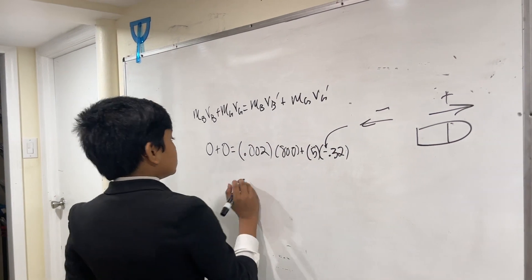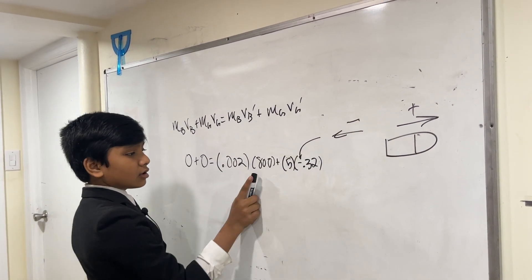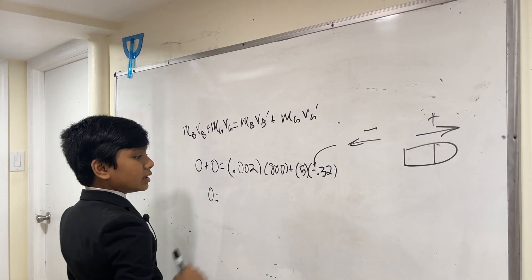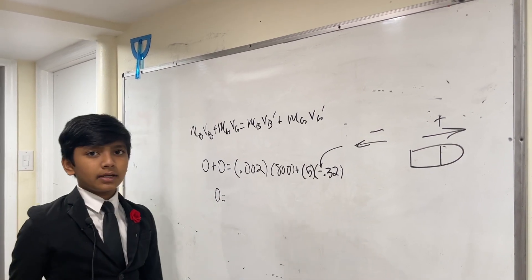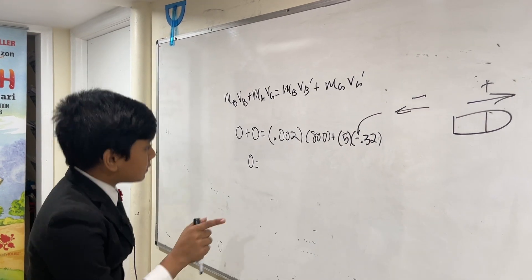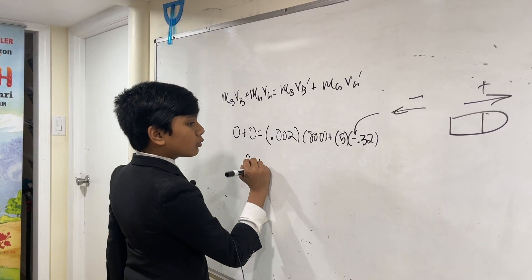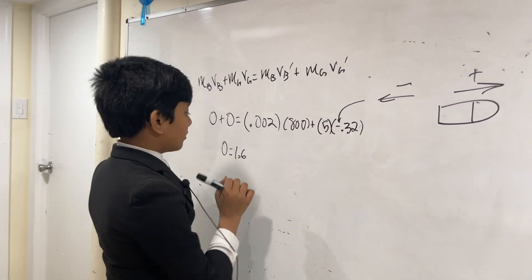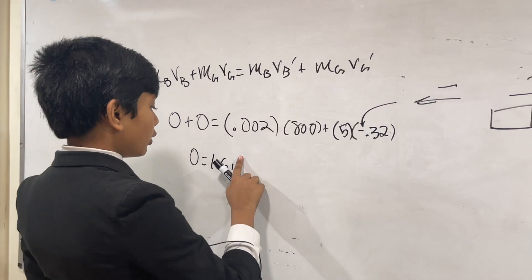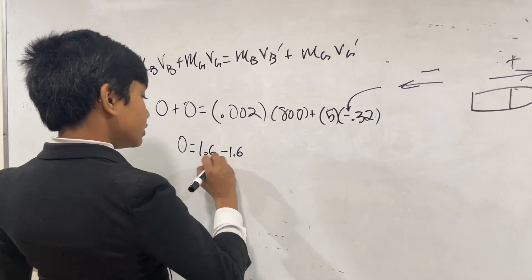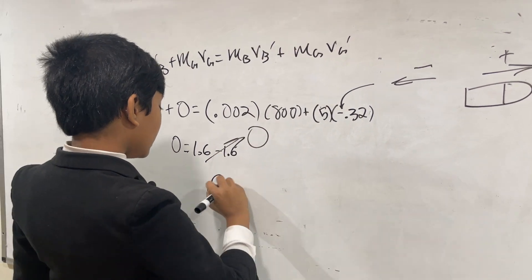Okay. So now, let's see if these are really equal. So, we have 0 is equal to what's 0.002 times 800? I wonder. Oh, it should be 1.6 because you've got to bring this 2 up by 2 zeros and then you've got to multiply by 8. And 5 times minus 0.32 is very simple. Also 1.6. And that gives you 0 on both sides.